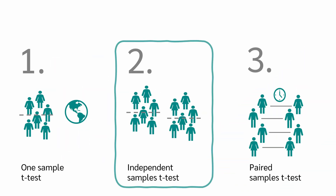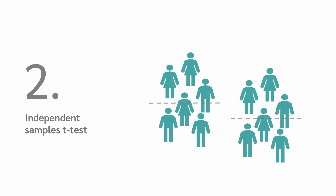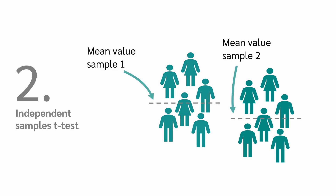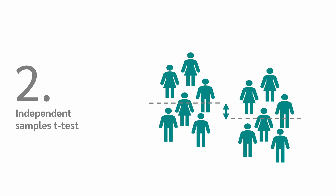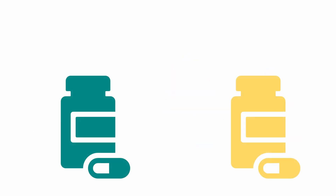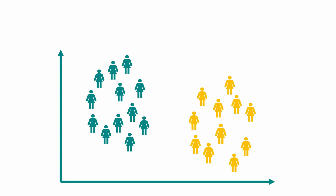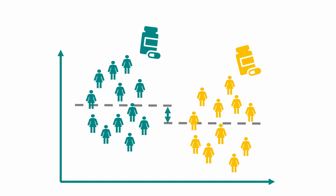And when do we use the independent samples t-test? We use the t-test for independent samples when we want to compare the means of two independent groups or samples, and we want to know if there is a significant difference between these means. For example, we would like to compare the effectiveness of two painkillers. We randomly divide 60 people into two groups. The first group receives drug A and the second group receives drug B. Using an independent t-test, we can test whether there is a significant difference in pain relief between the two drugs.